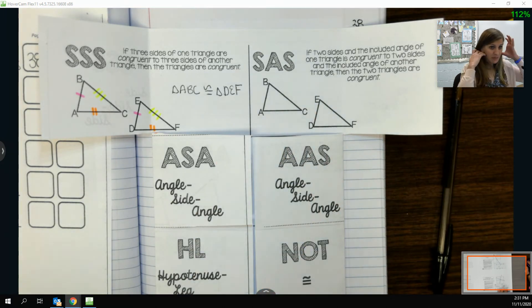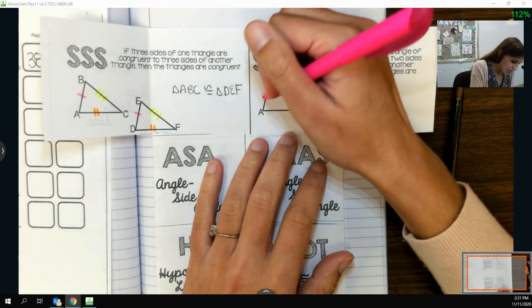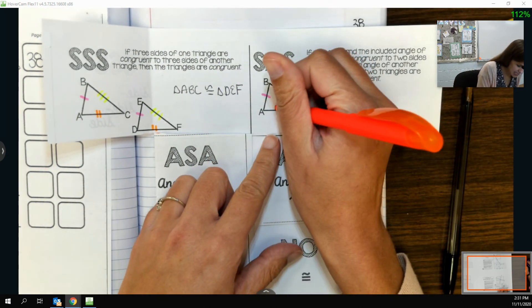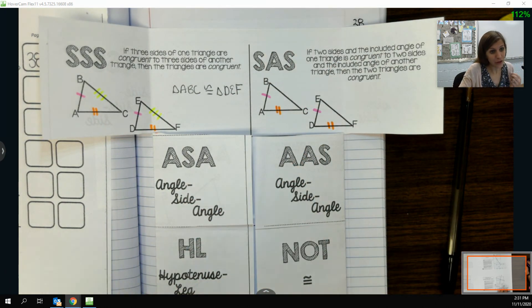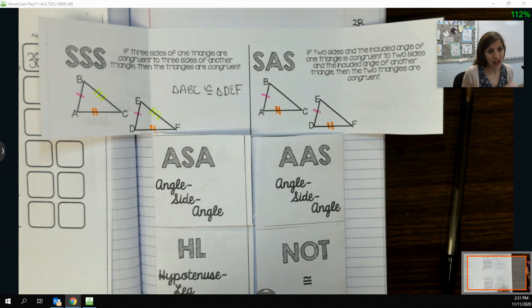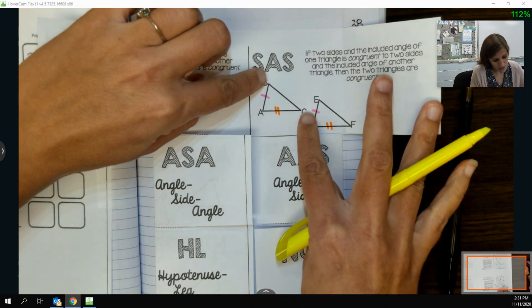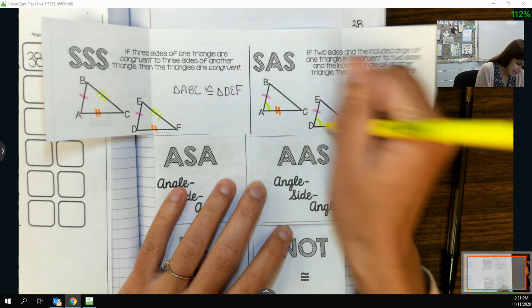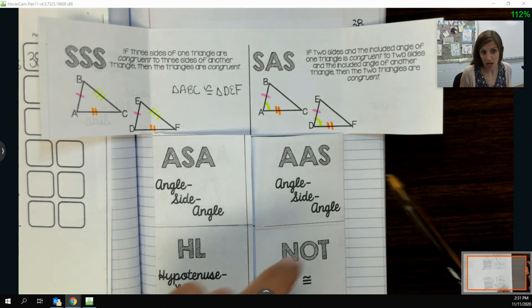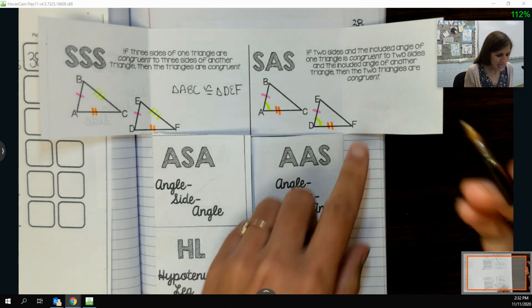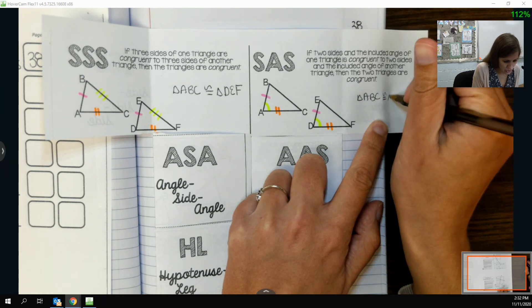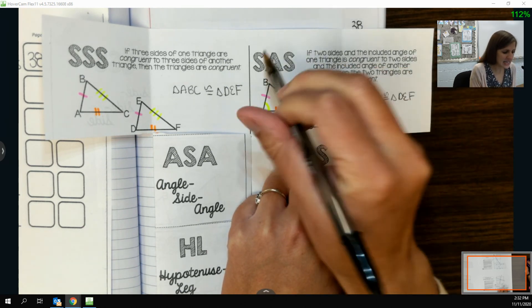Again, I'm going to stress that we marked this stuff in our picture. What we would see in our picture is that one side was congruent to another, and then we had a second side congruent. Then the third thing has to be an angle, and that angle has to be the one that's in between those two sides. So kind of like where those two sides come together, I would need to know that angle A was congruent to angle D. If that were the case, if this was what I saw in my picture, if this was what I was able to mark...